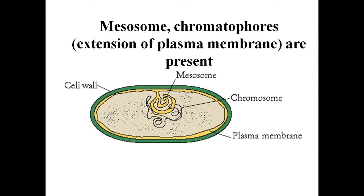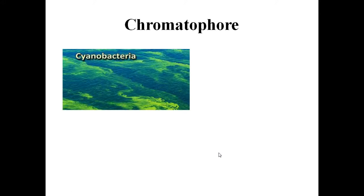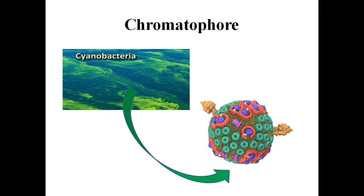In some prokaryotes, like cyanobacteria, there are other membranous extensions into the cytoplasm called chromatophores, which contain pigment.